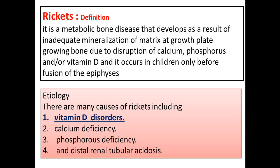What is the etiology? There are many causes of rickets, including the most important one: vitamin D deficiency or disorder, second is calcium deficiency, third is phosphorus deficiency, and fourth is distal renal tubular acidosis, as it affects the absorption of calcium and phosphorus through the tubule.